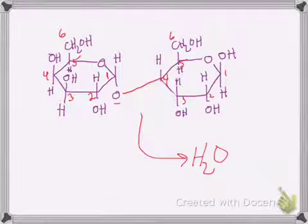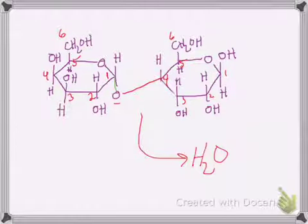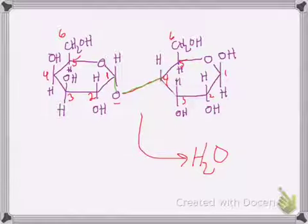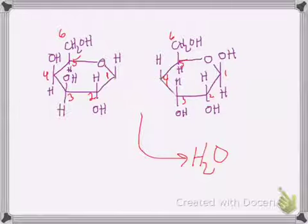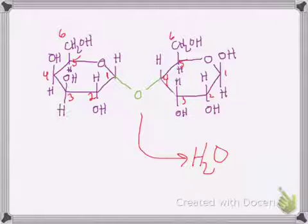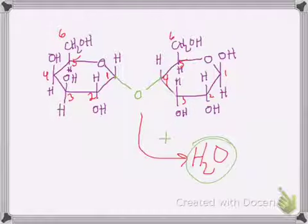A new bond is formed between that oxygen and carbon number four. The connection point between the two sugars is: carbon one is connected to the oxygen, and that oxygen is connected to carbon four — so the bond is carbon one, oxygen, carbon four. Many times when disaccharides are drawn, the oxygen is shown more centered between the two sugars, with bonds from that oxygen to each of the carbons. The products in this case are the disaccharide plus the molecule of water.